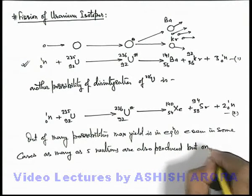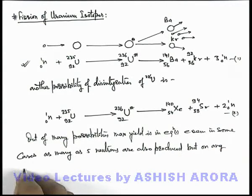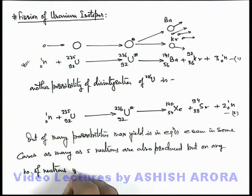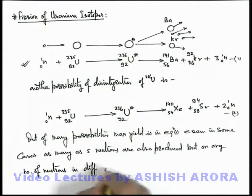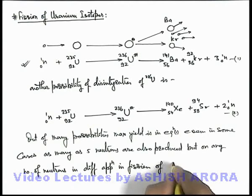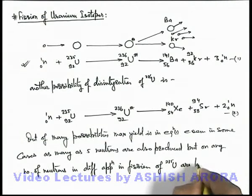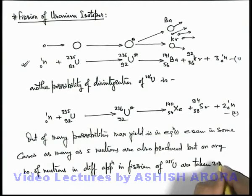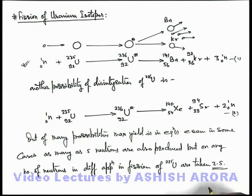So we consider, but on average, the number of neutrons in different applications in fission of uranium-235 are taken as 2.5, which is as per the experimental data we consider. For one uranium-235 nuclei on an average, we consider 2.5 neutrons are being produced.